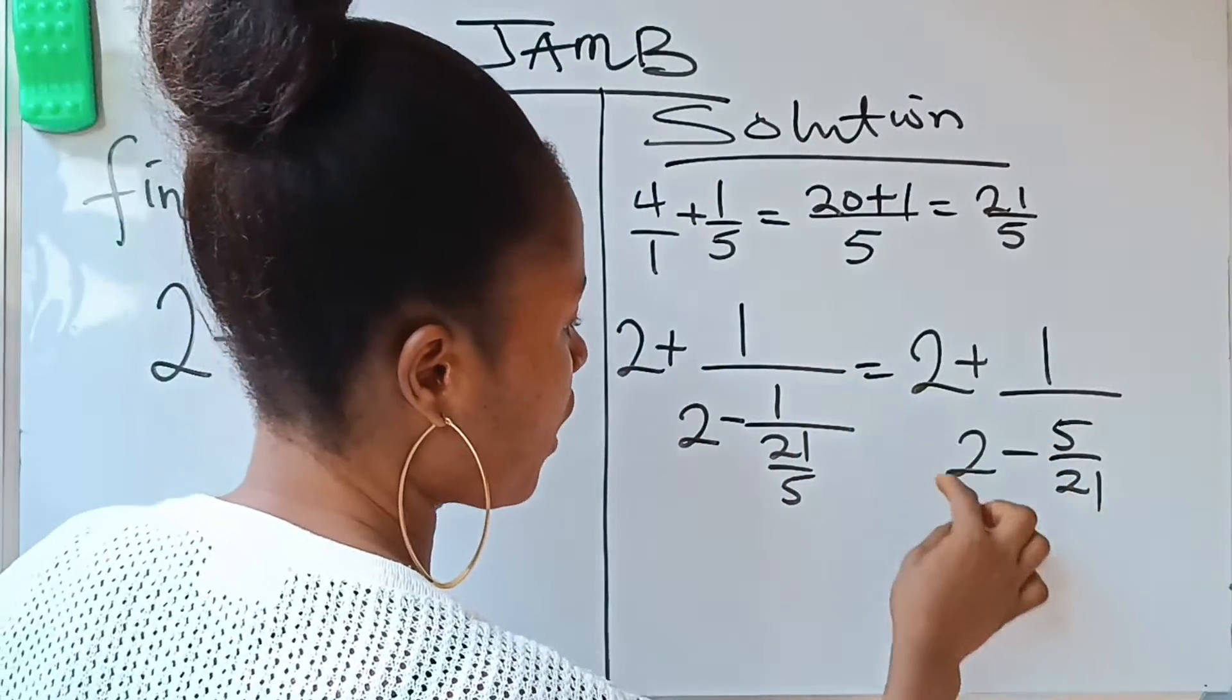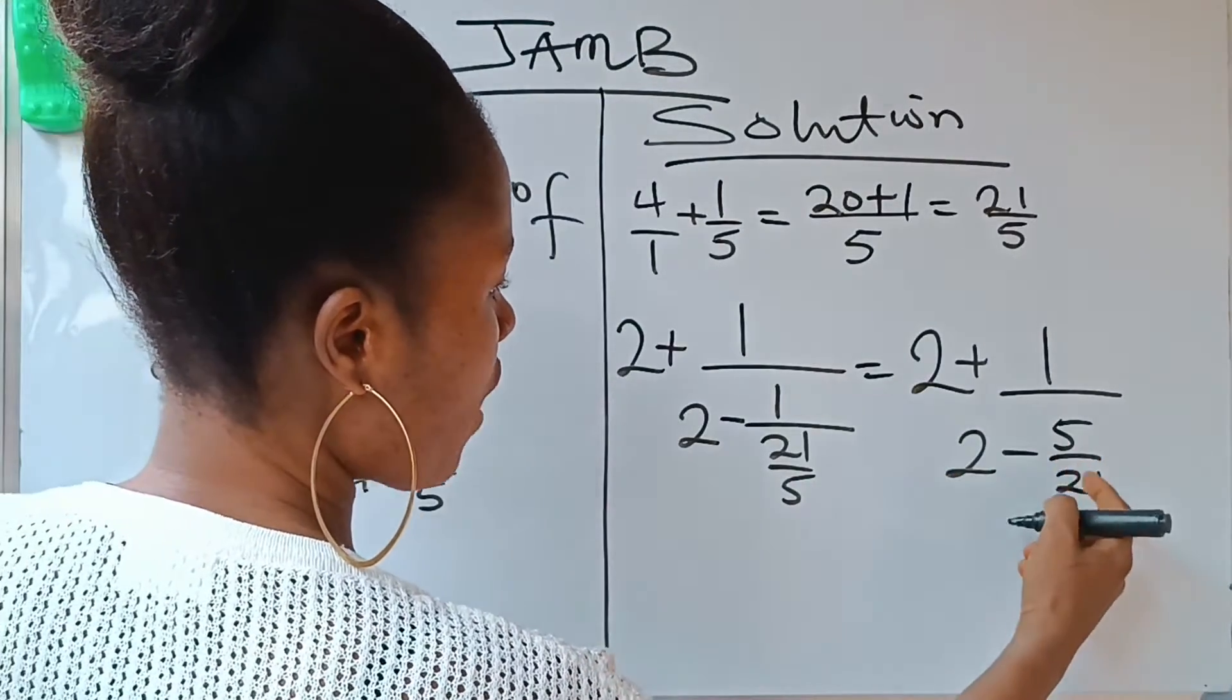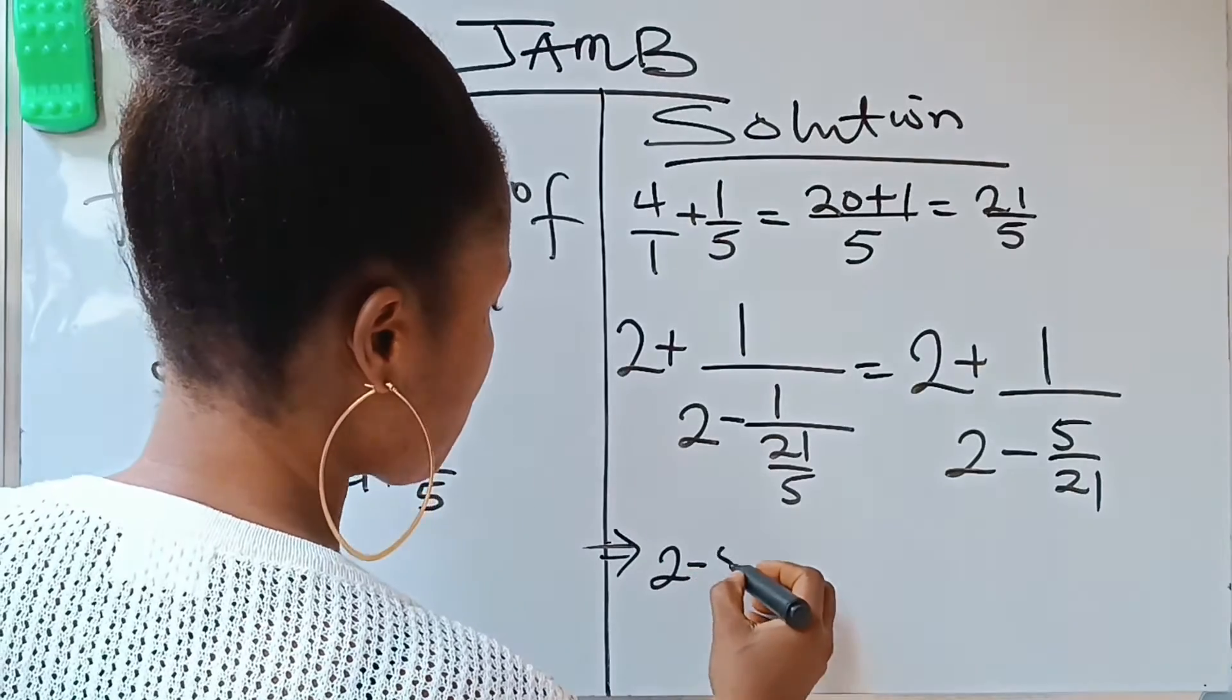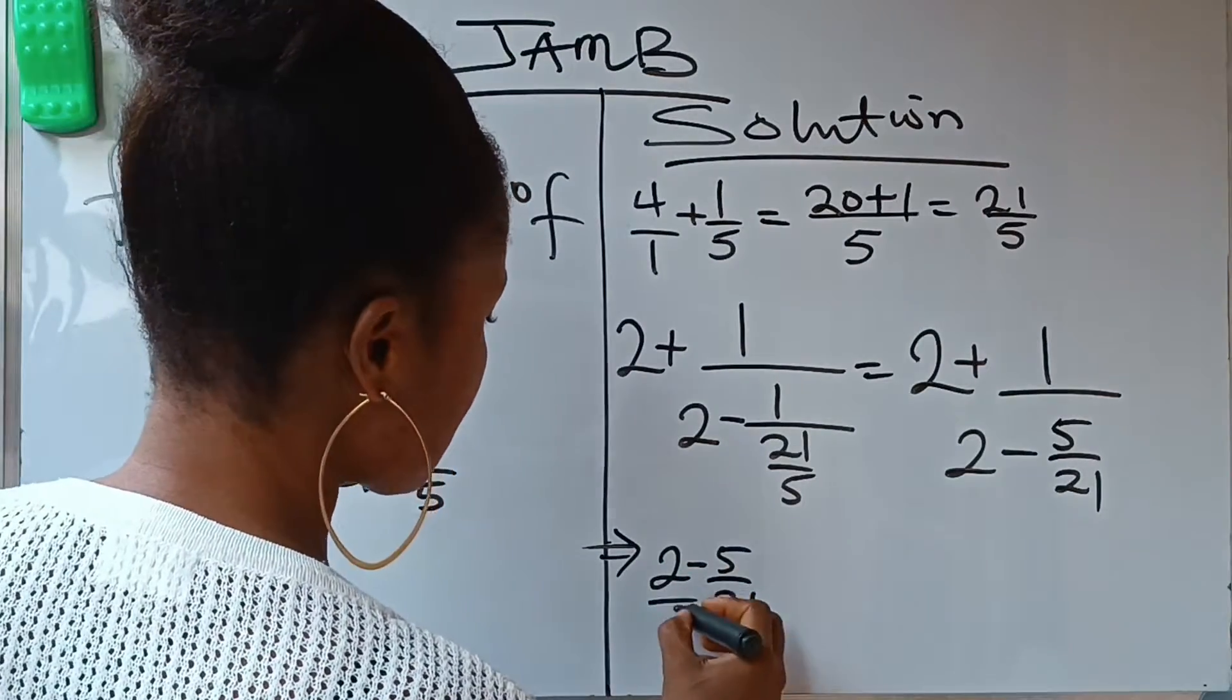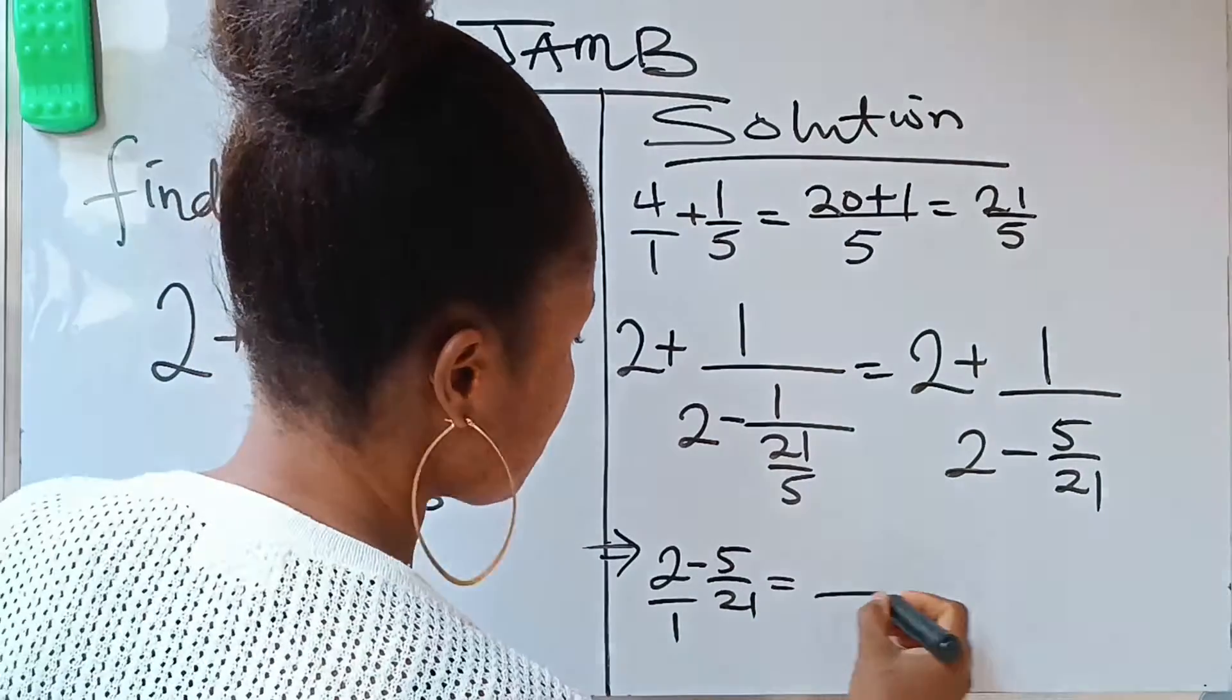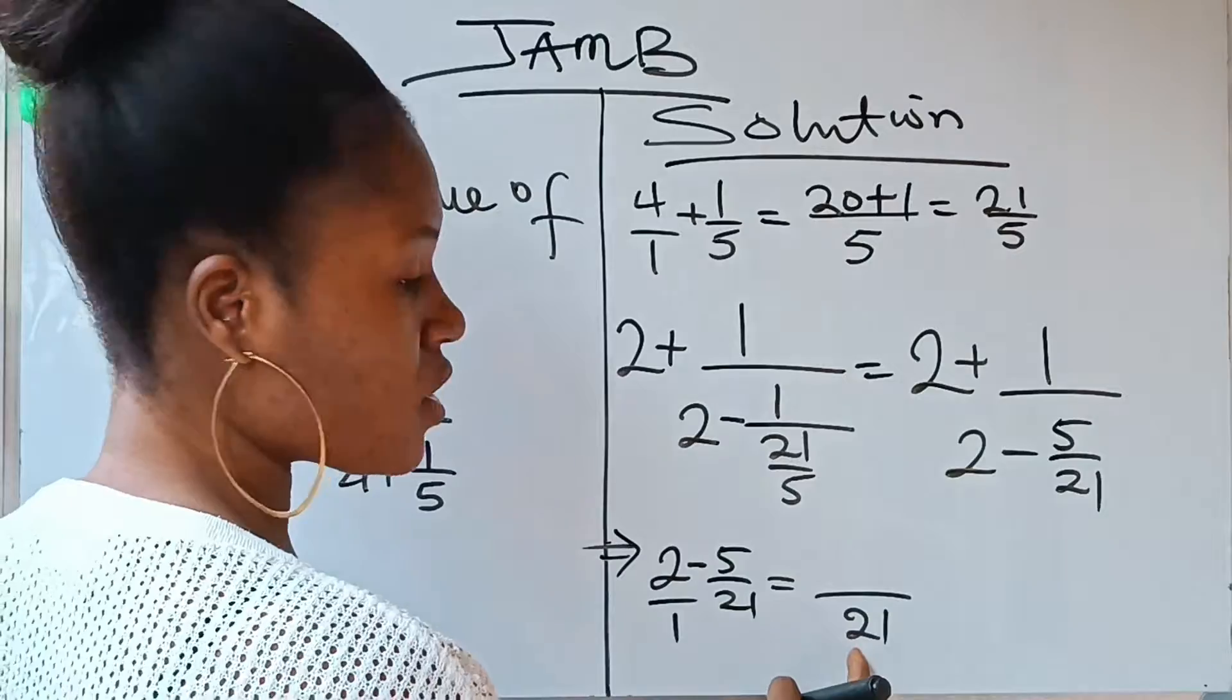So we are going to solve 2 minus 5 over 21. We have 2 minus 5 over 21, same thing as 2 over 1 minus 5 over 21. What is the LCM? The LCM is 21.